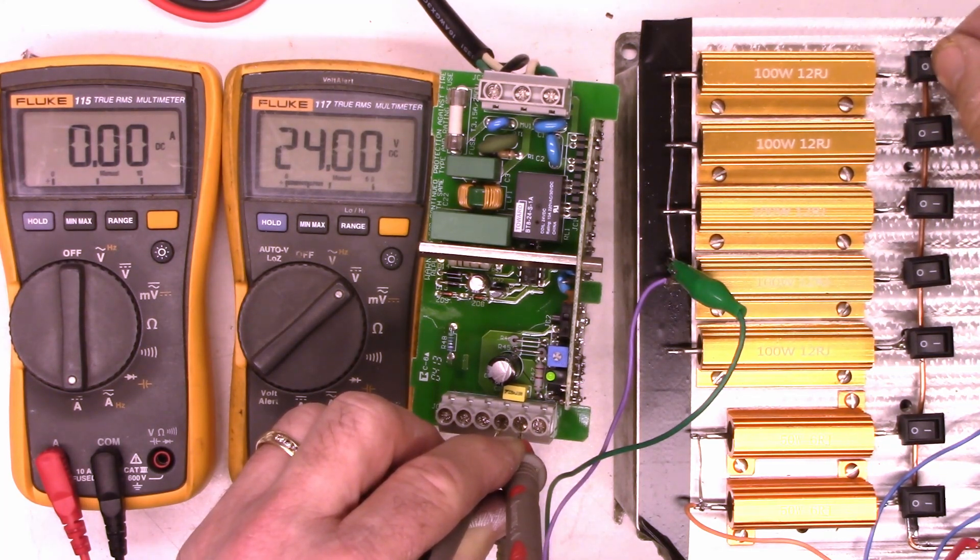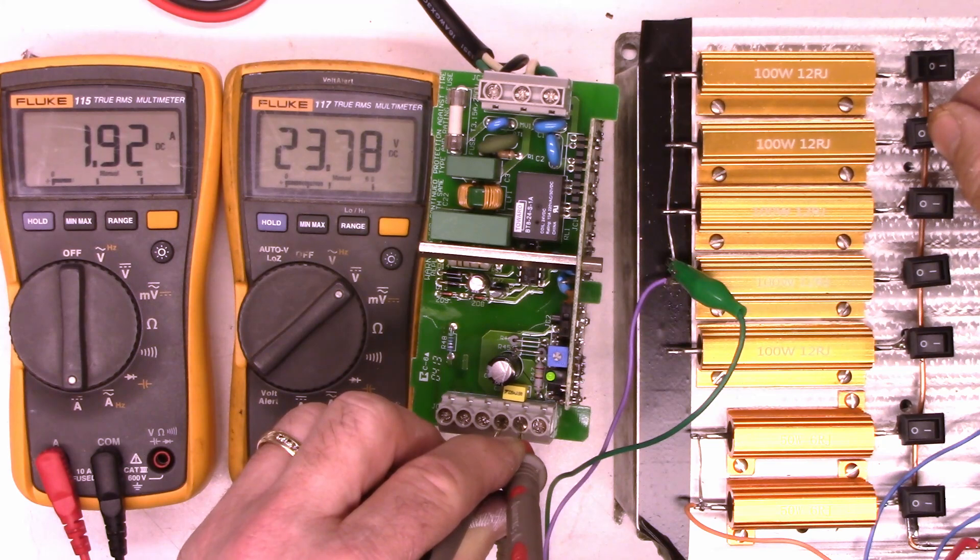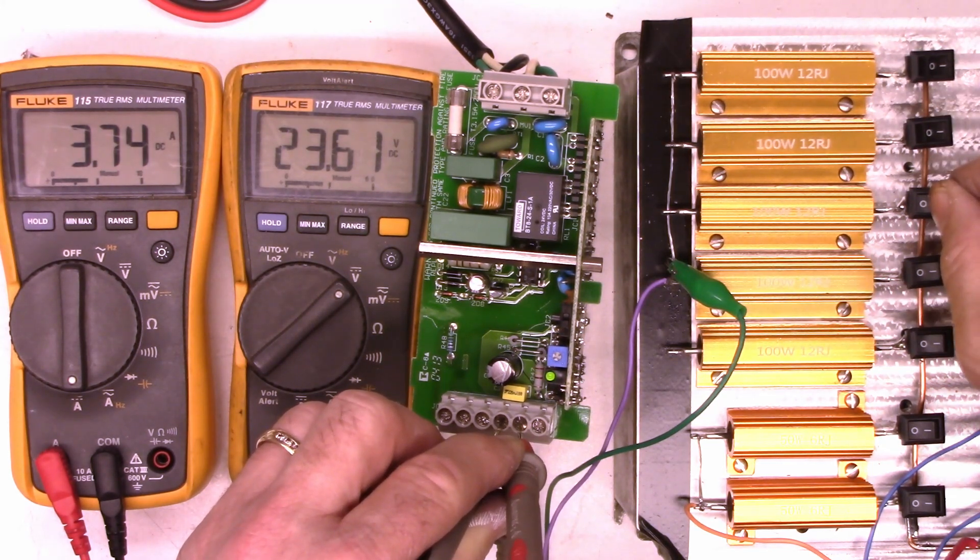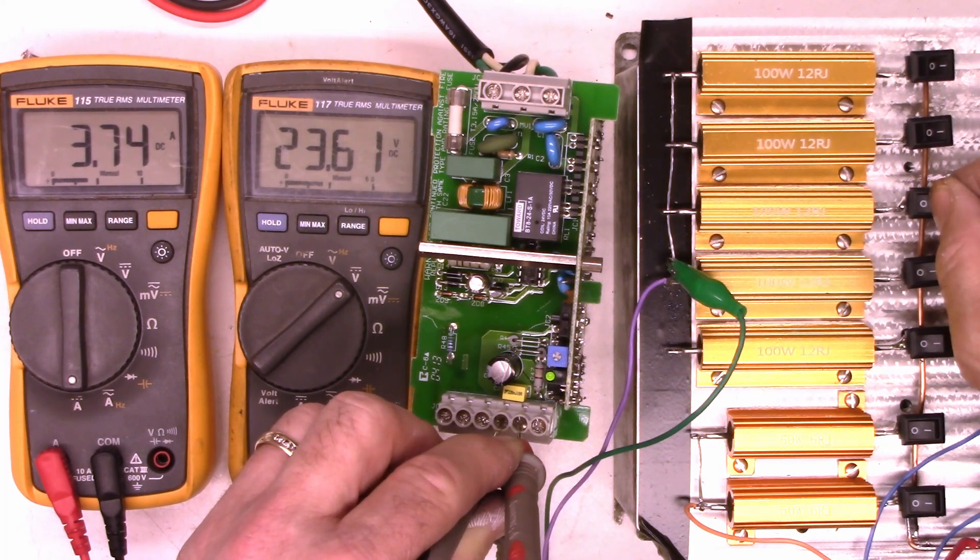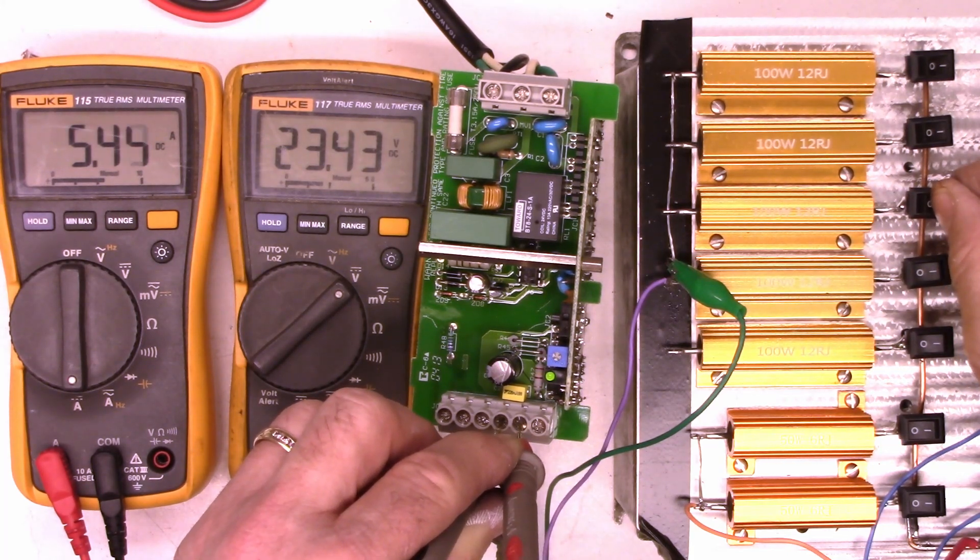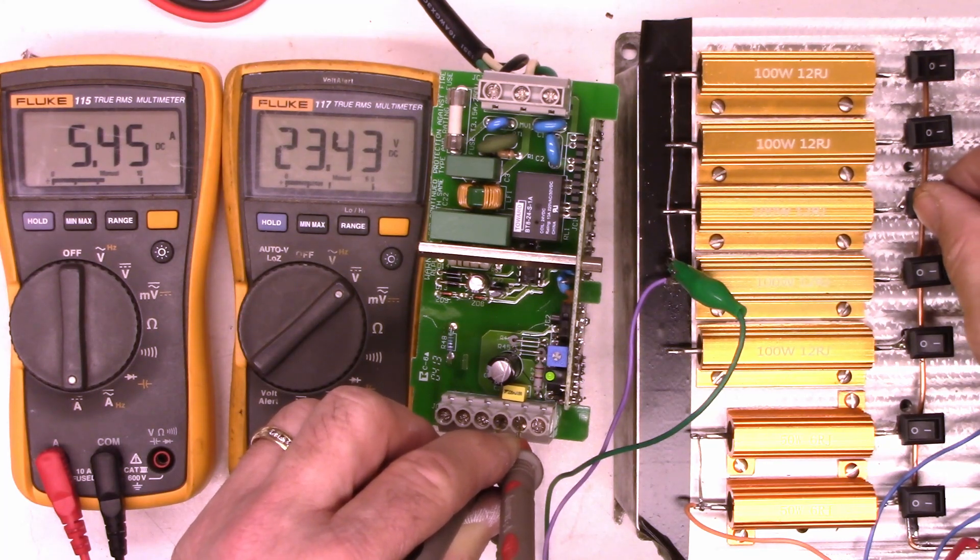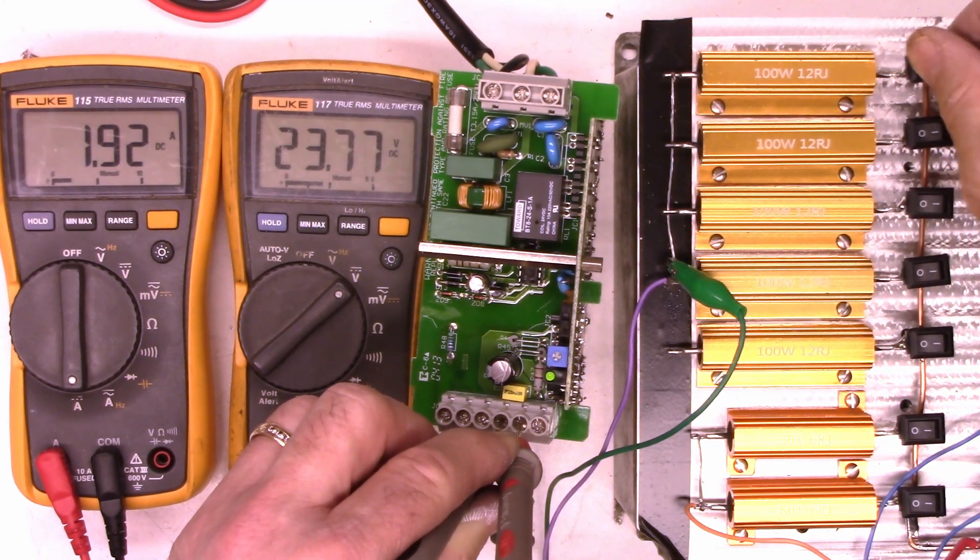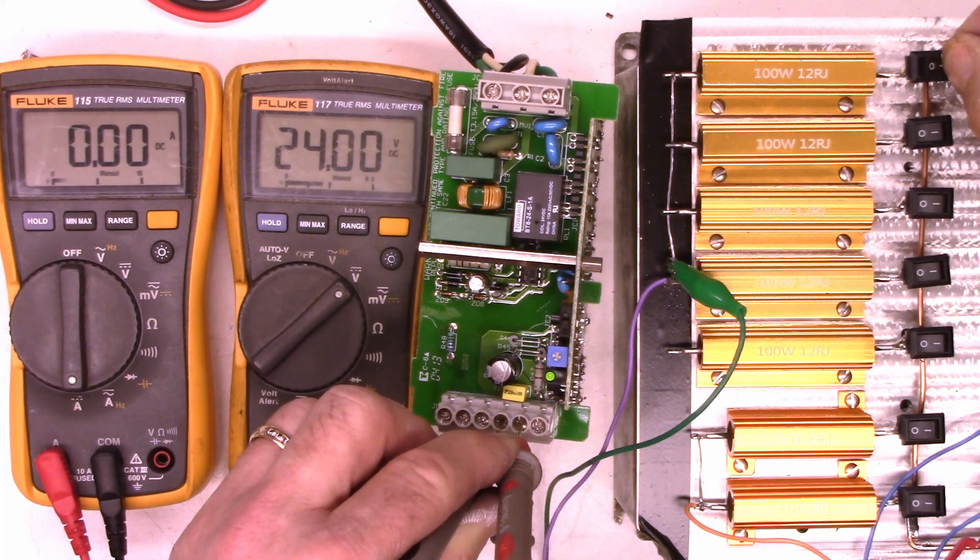And it's keeping the voltage at 5.4 amps within half a volt of the 24 volt output unloaded. So I'm at 24.0 volts unloaded. At 1.9 amps, I've got 23.78. 3.7 amps, I've got 23.6 volts. And 5.4 amps, I've got 23.43 volts. So I would say it's a success.